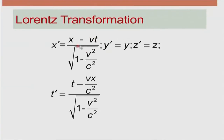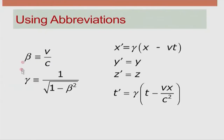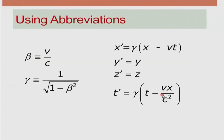This is the new transformation equation called the Lorentz transformation. In the Lorentz transformation, x prime = γ(x − vt), where the factor (x − vt) is now multiplied by γ = 1/√(1 − v²/c²). For t prime, we have t prime = γ(t − vx/c²). Standard notation in relativity is β = v/c and γ = 1/√(1 − β²). So the equations are: x prime = γ(x − vt), y prime = y, z prime = z, t prime = γ(t − vx/c²).